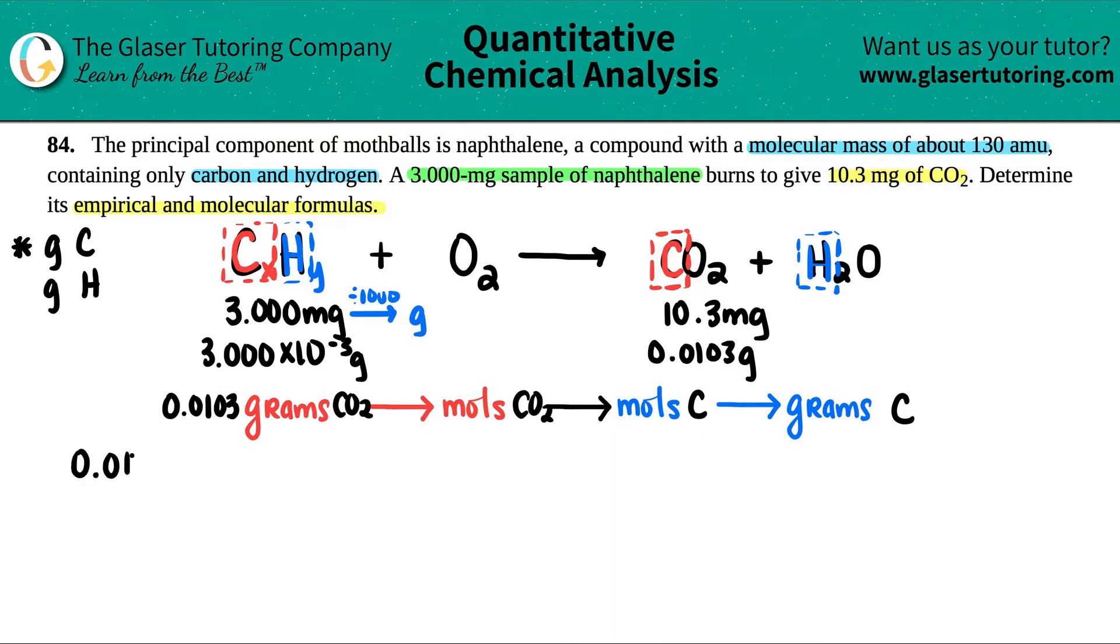So 0.0103 grams of CO2. Use your ratio. Grams of CO2 goes on the bottom because I don't want that unit. Moles of CO2 goes up on top. A gram to mole conversion of the same compound is always the periodic table. So when you're using the periodic table, you always have one mole. So one mole of CO2 is whatever CO2 is on the periodic table. It's 44.01 grams.